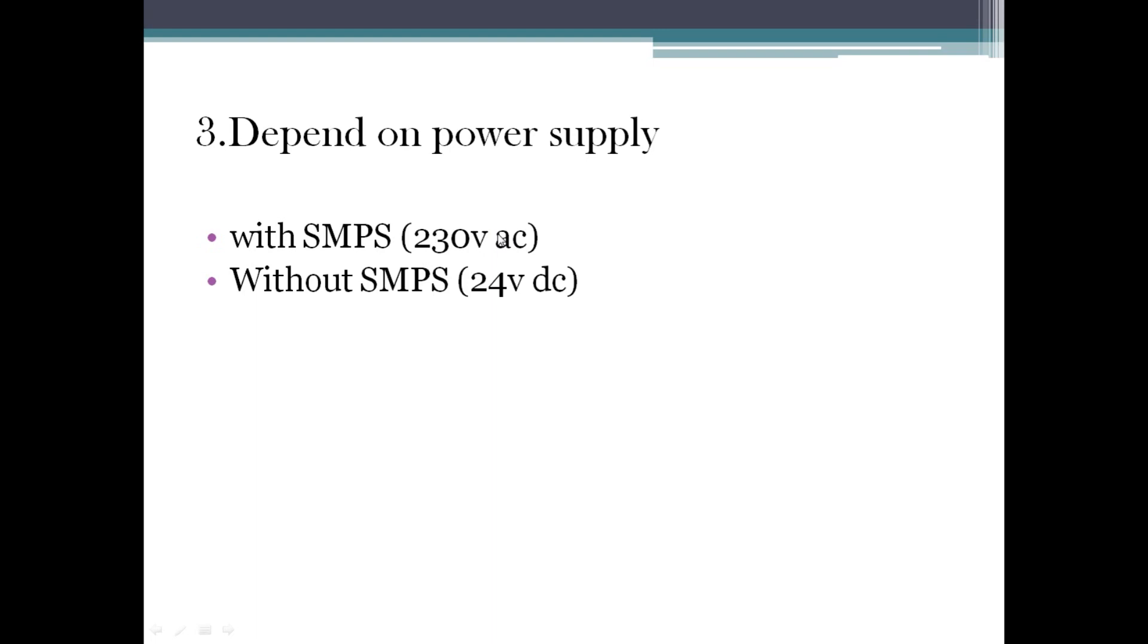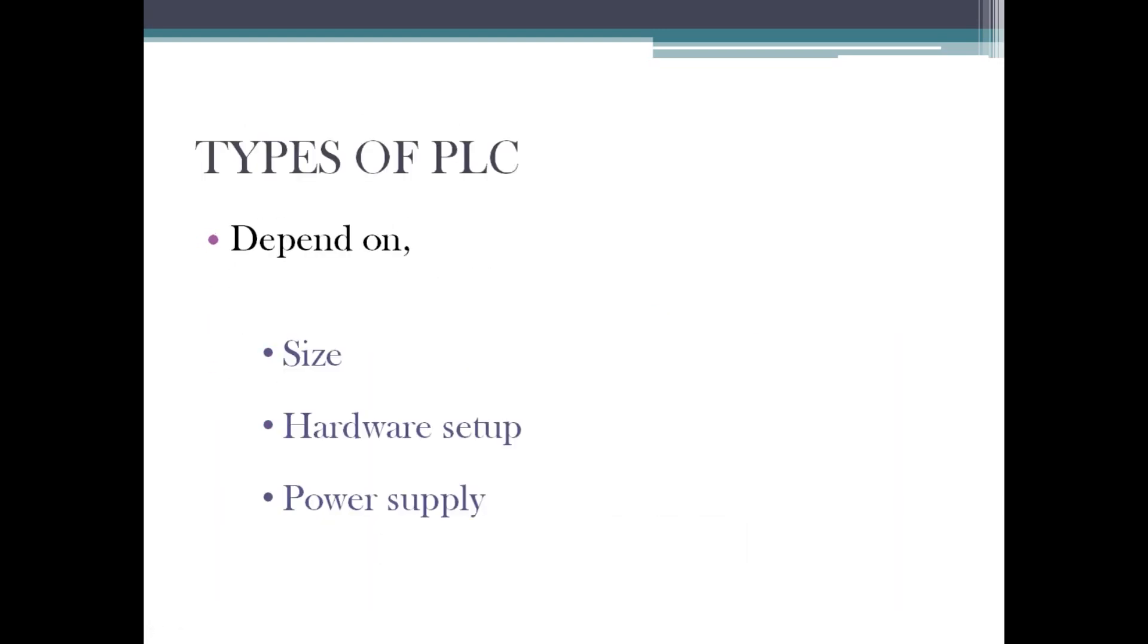Suppose if you are giving 24 volt to the PLC, that will be without SMPS. That means the PLC is not having SMPS, that's why I am giving 24V. These you can get from the user manual of PLC. There itself they can mention what kind of power supply we need to give, they will be giving it elaborately. These are all the three general classifications when it comes to the types of PLC.